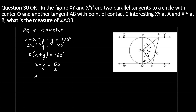So x plus y equals 90 degrees. Looking at the diagram, x is angle AOC and y is angle COB, and their sum is angle AOB. Hence angle AOB equals 90 degrees — which is what we had to find.